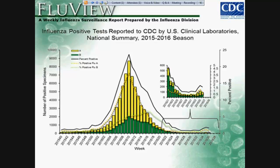Virologic surveillance comes from laboratories represented from the World Health Organization collaborating laboratories and the National Respiratory and Enteric Virus Surveillance System, who report the number of respiratory specimens tested and the number positive for influenza types. A subset of these specimens are sent to CDC for antiviral and antigenic characterization. The virologic surveillance also includes surveillance for novel influenza strains. A human infection with novel influenza A is a nationally notifiable condition. Novel influenza A viruses are human infections with influenza A viruses that are different from currently circulating human seasonal influenza H1 and H3 viruses.